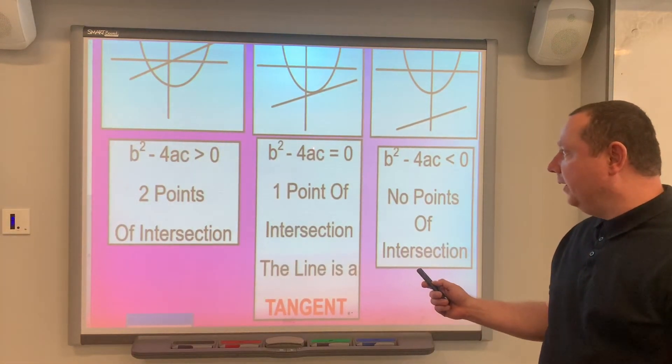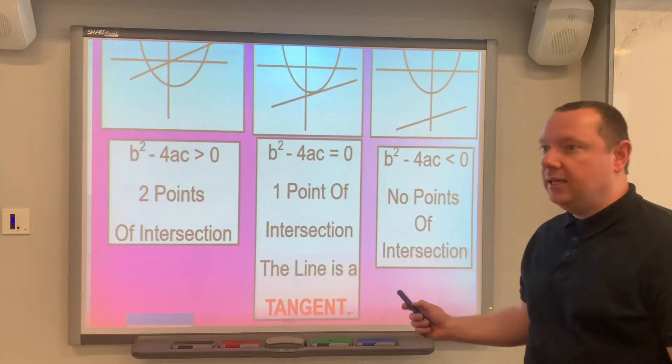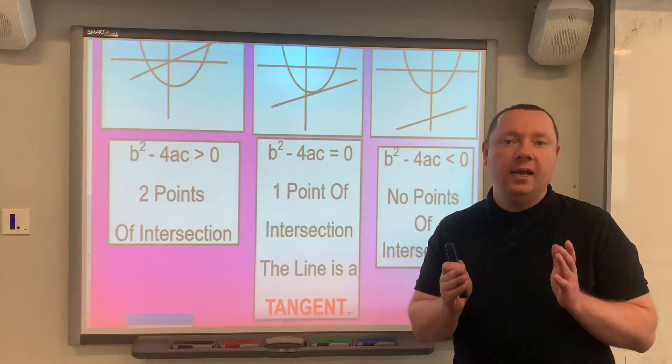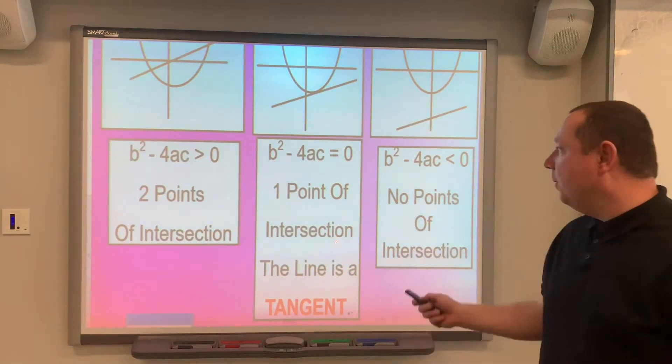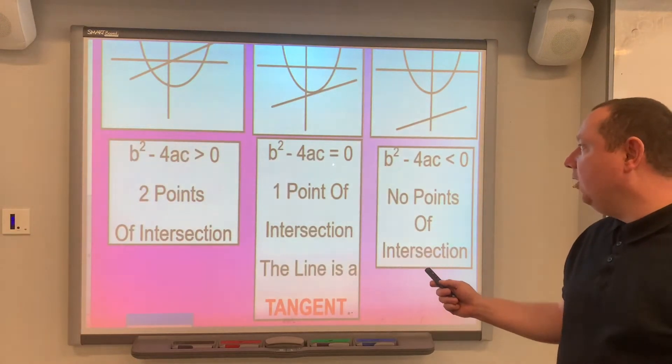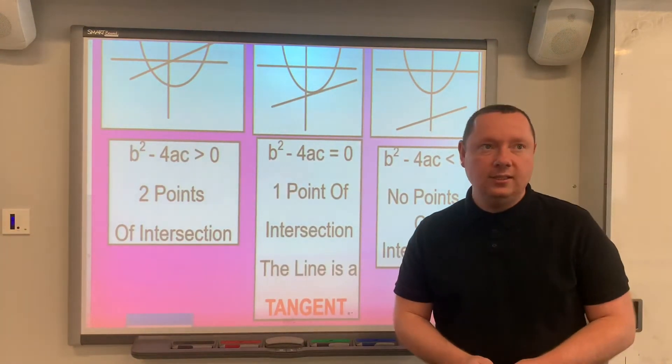At higher maths, the key one we'll look at is this one all the time. We will be told that the line is a tangent to the parabola, or we'll be asked to prove that it is by showing b squared minus 4ac equals zero. Let's look at a few examples.